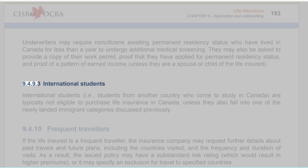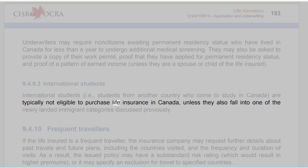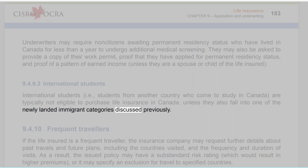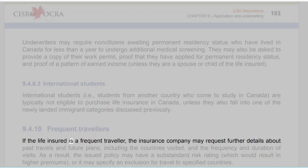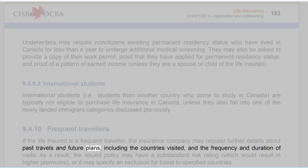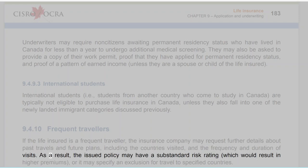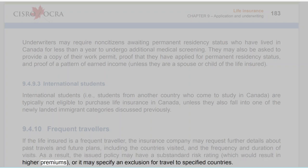Section 9.4.9.3: International Students. International students — students from another country who come to study in Canada — are typically not eligible to purchase life insurance in Canada, unless they also fall into one of the newly landed immigrant categories discussed previously. Section 9.4.10: Frequent Travelers. If the life insured is a frequent traveler, the insurance company may request further details about past travels and future plans, including the countries visited and the frequency and duration of visits. As a result, the issued policy may have a substandard risk rating resulting in higher premiums, or it may specify an exclusion for travel to specified countries.